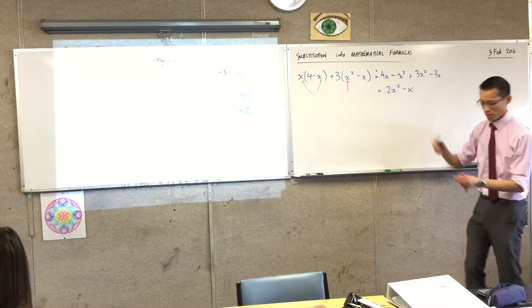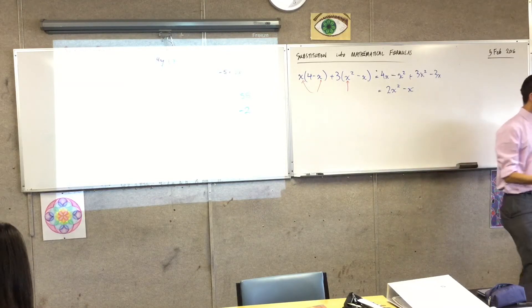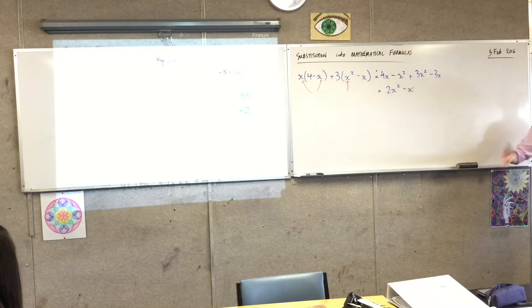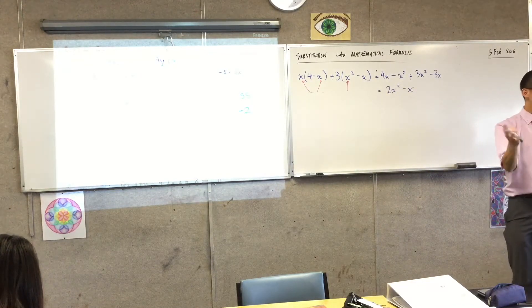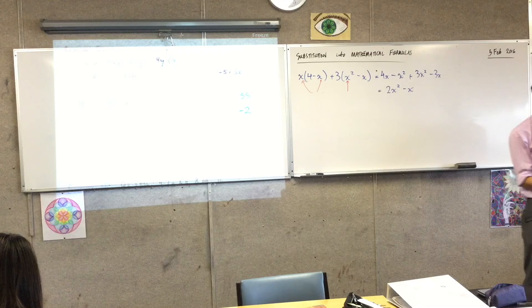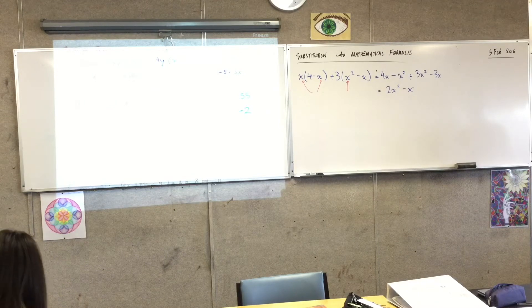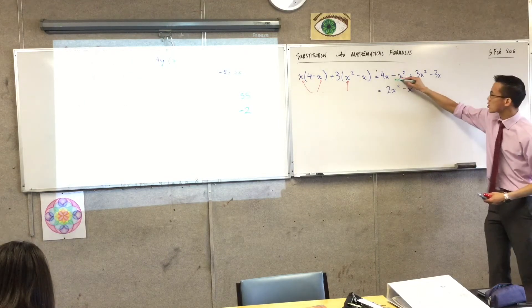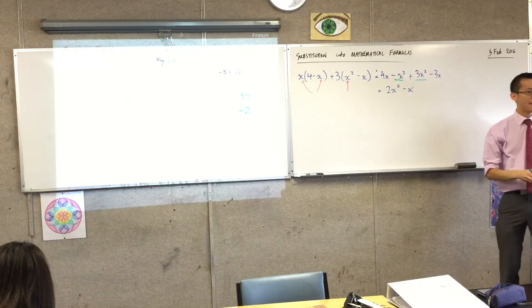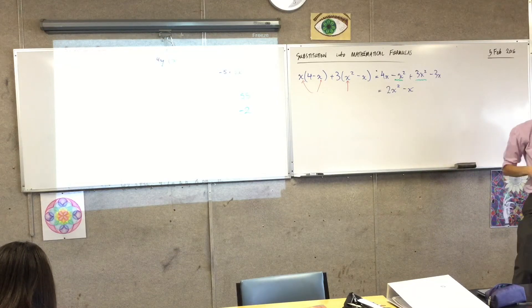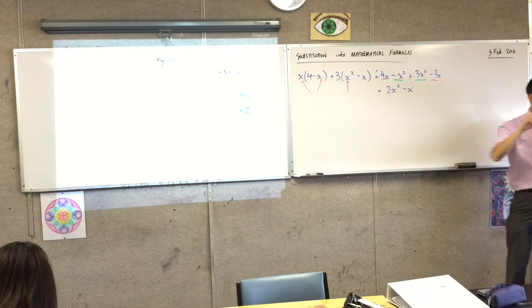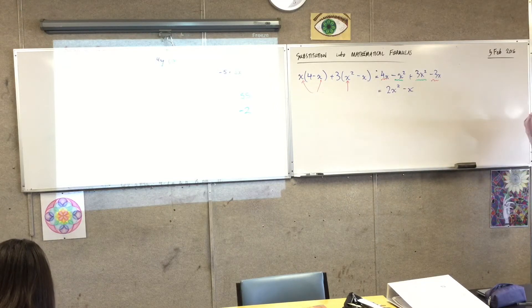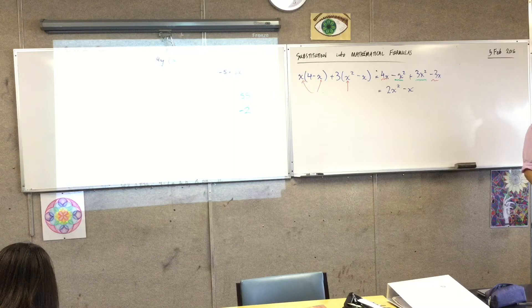Now I'll just make a quick note because I sort of did it without explaining. When you go ahead collecting like terms, and you have more than one list of things you need to actually combine, it's in your interest to do it in a little bit of order. I did the x squareds first and then I moved on to the x's. Kind of what I didn't say but I was doing in the back of my head is I just look at the power and I do the biggest ones first and then I go down all the way to the smallest ones.